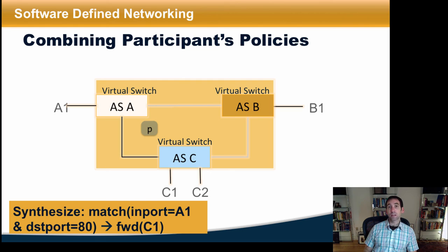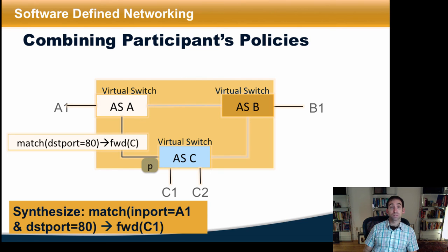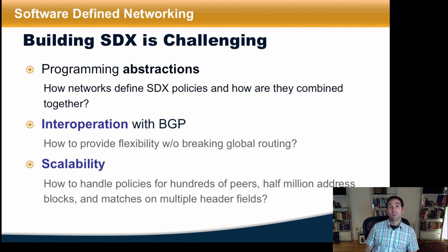Behind the scenes, the controller composes these policies in sequence according to the path that a packet takes through the exchange point. The packet first passes through ASA, at which point ASA's policies are applied, and then the packet is passed to ASC, at which point ASC's policies are applied. The SDX controller is also designed to interoperate with BGP so that traffic is only forwarded on a port to an AS if the AS has advertised the corresponding IP prefix. The SDX runtime also includes many optimizations that allow the forwarding table to be massively compressed based on portions of flow space that all have the same forwarding decision.